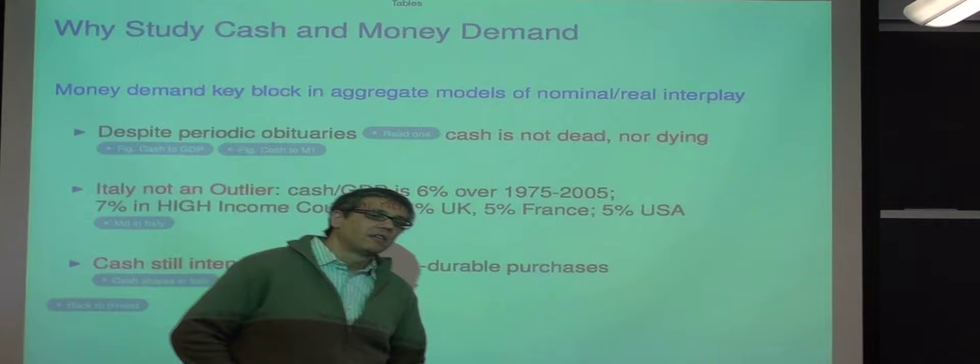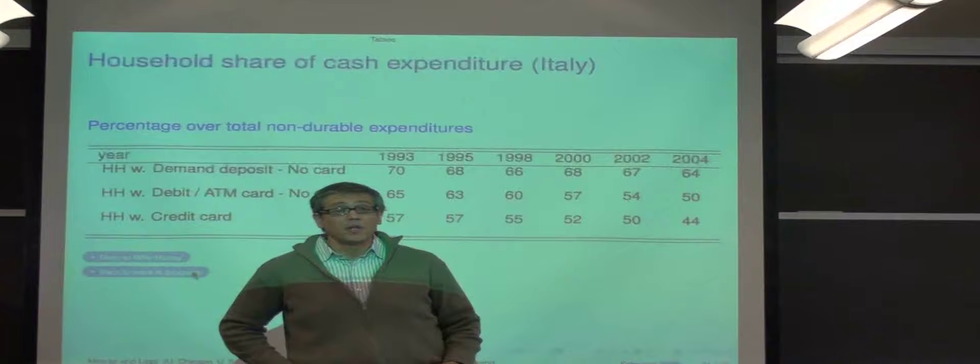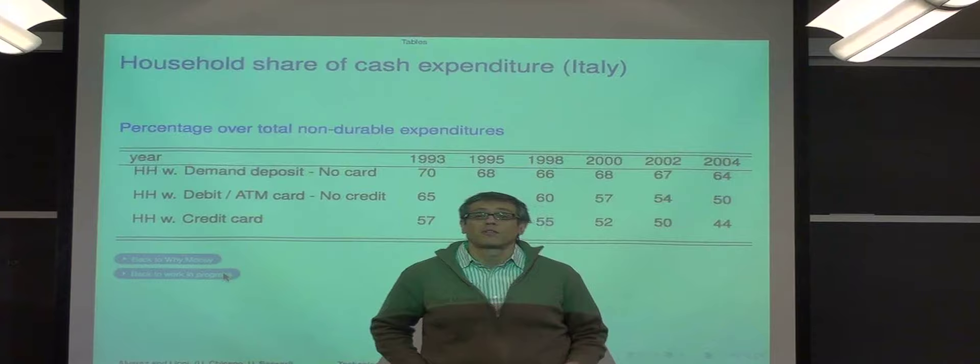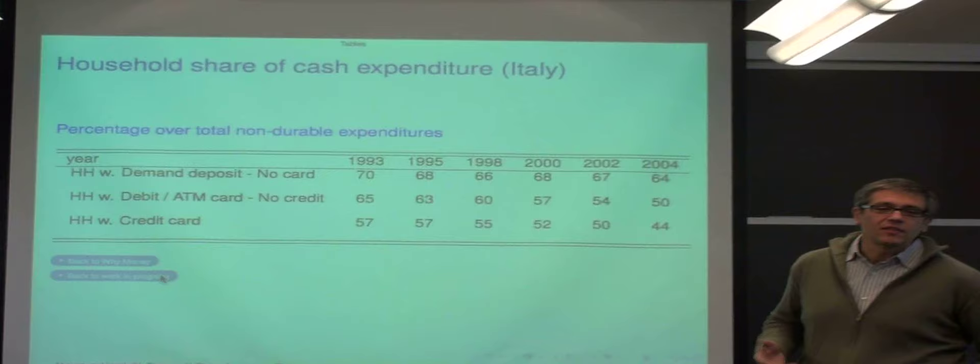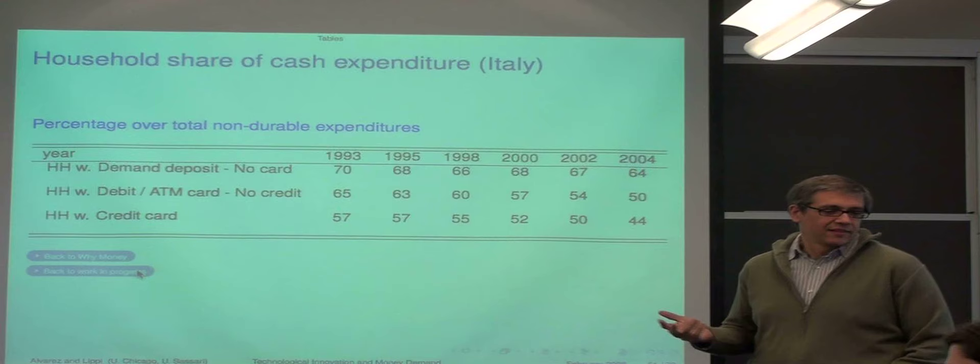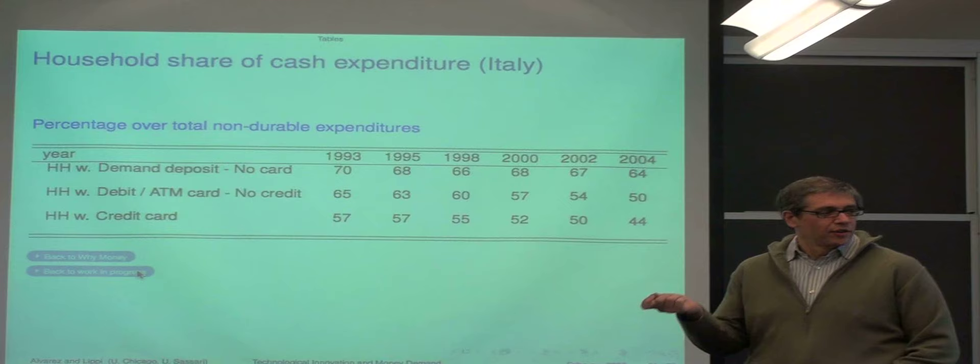Italy is relatively backwards if you think about the level of development in terms of their bankization. Now this is very important information, this variable on the use of cash. If you think about most of our theories of money demand based on transactions, they scale the holdings of money with something that is supposed to be related to transactions, but it's kind of like some other variable, like income or consumption. You really want to know how much you are using this cash from transactions.